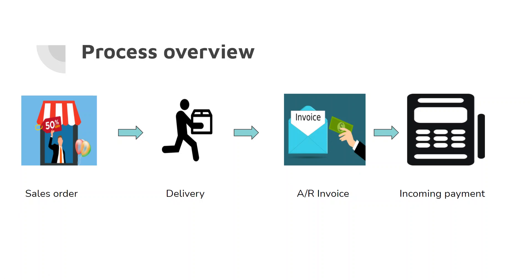The AR Invoice is the only mandatory document in the whole sales process. It triggers the payment process and records revenue in the profit and loss statement. If you're handling a small business with rush hours, you can directly create the AR Invoice — it will push the delivery automatically, so you don't need to create a sales order first. After the AR Invoice, you go directly to incoming payments, which are handled in the Banking module.